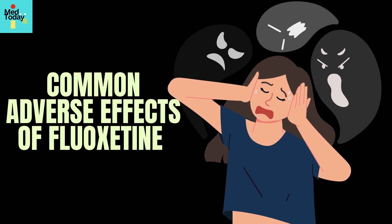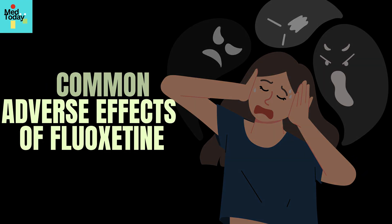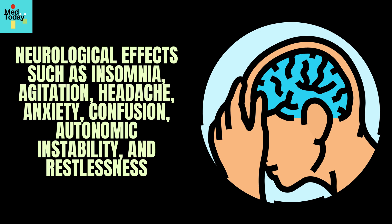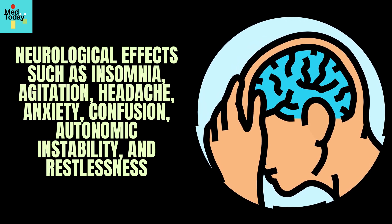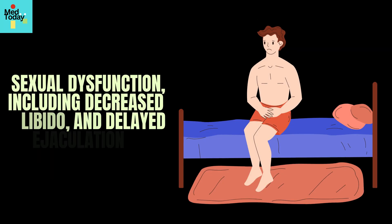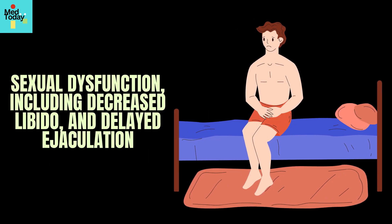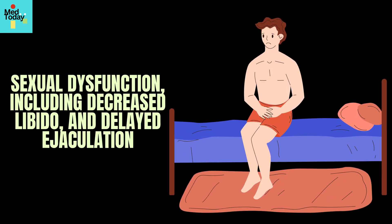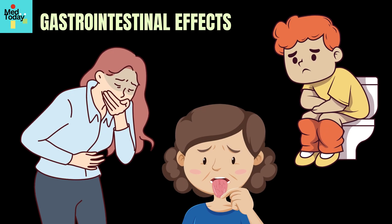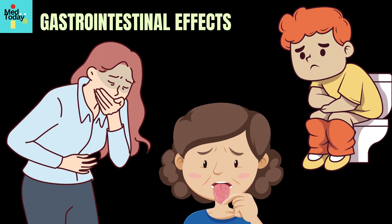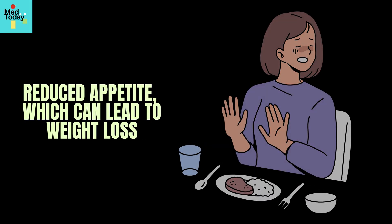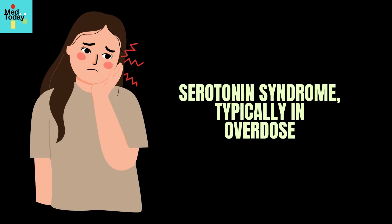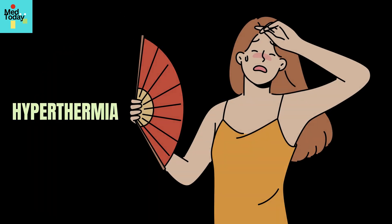Some common adverse effects of fluoxetine include: neurological effects such as insomnia, agitation, headache, anxiety, confusion, autonomic instability, and restlessness; sexual dysfunction including decreased libido and delayed ejaculation; gastrointestinal effects such as nausea, diarrhea, and dry mouth; cardiovascular effects such as QT prolongation; reduced appetite which can lead to weight loss; serotonin syndrome, typically in overdose; hyperthermia; and muscle rigidity.